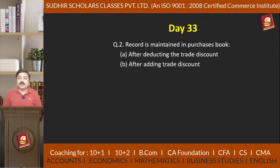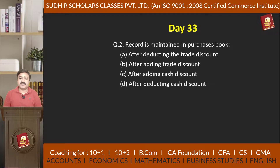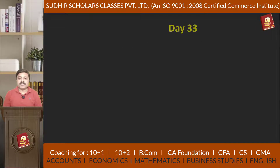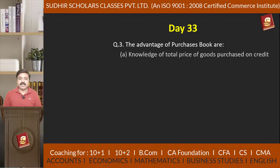Option B: after adding trade discount, Option C: after adding cash discount, Option D: after deducting cash discount. Now question number 3: The advantages of purchase book are — Option A: knowledge of total price of goods purchased on credit.